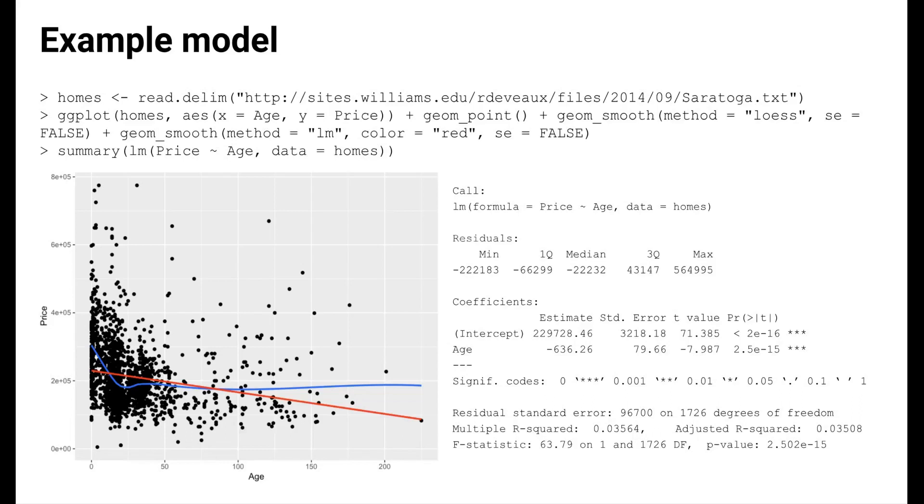We see from the model output that on average, a new house is worth about $230,000. This is conveyed by the intercept. Also, on average, house prices decrease by about $640 per year of age. This comes from the estimated coefficient for age.